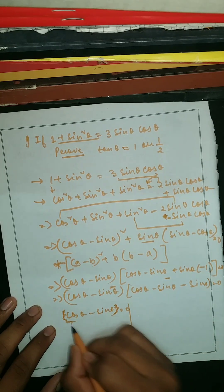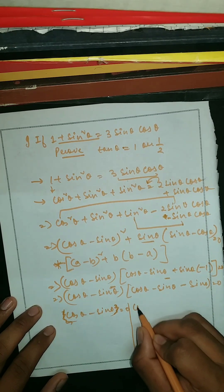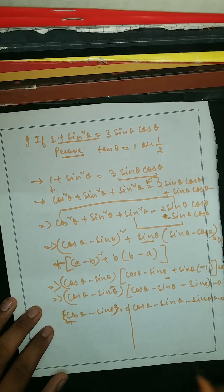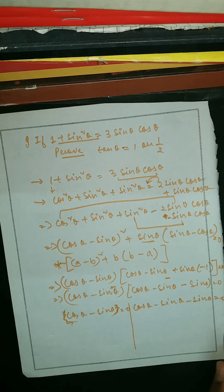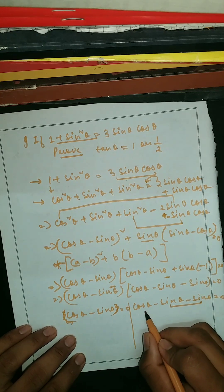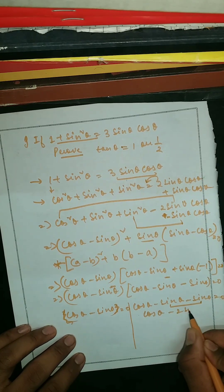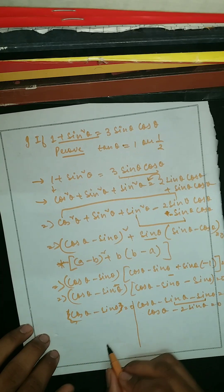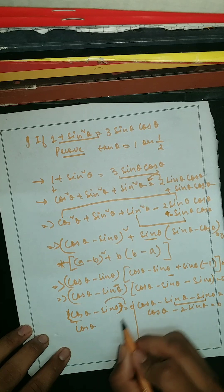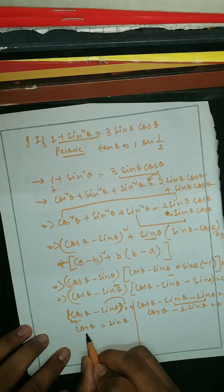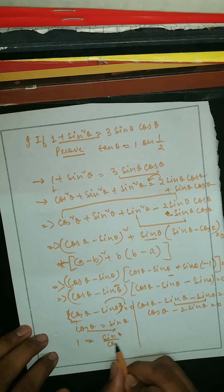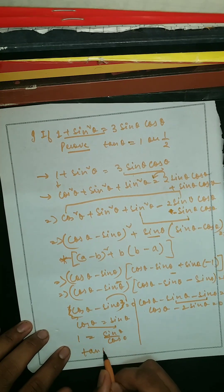So we have (cosθ - sinθ)(cosθ - sinθ - sinθ) = 0, which gives (cosθ - sinθ)(cosθ - 2sinθ) = 0. Setting the first factor to zero: cosθ - sinθ = 0, so sinθ/cosθ = 1, meaning tanθ = 1.